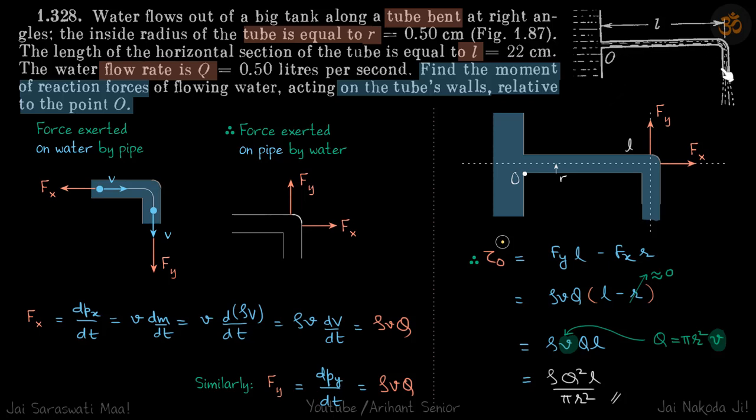We have a bent tube and the length of the tube is L, and they have given the radius of this tube is r. They have also given the flow rate of water to be Q.